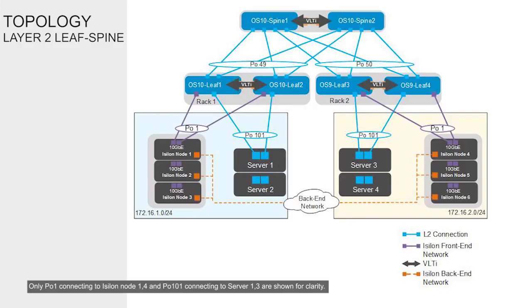Let us look at the Layer 2 leaf-spine example. In a Layer 2 topology, the spine switches and the leaf switches are in VLT. Port channel 49 connects leaf pair 1 and 2 with spines 1 and 2. Port channel 50 connects leaf pair 3 and 4 with spines 1 and 2. In rack 1, port channels 1, 3, and 5 connect Isilon nodes 1 through 3 to leaf pairs 1 and 2, and port channels 101 and 102 connect servers 1 and 2. In rack 2, port channels 1, 3, and 5 connect Isilon nodes 4 through 6 to leaf pairs 3 and 4, and port channels 101 and 102 connect servers 3 and 4.